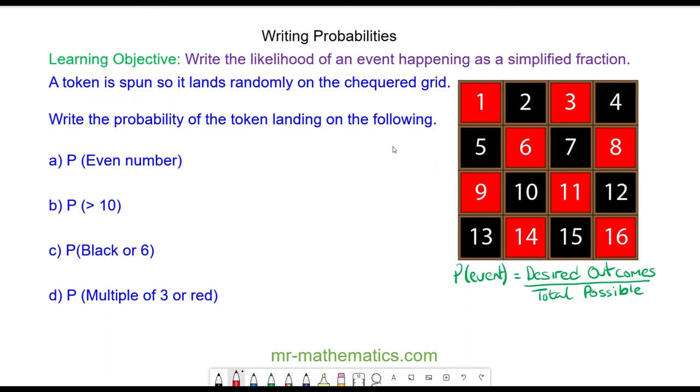You can resume when you're ready. The probability of an even number: well, the total number of possible outcomes is 16, and 8 of them are even. We can simplify this fraction by dividing both by 8, so we have 1/2, which is one half.